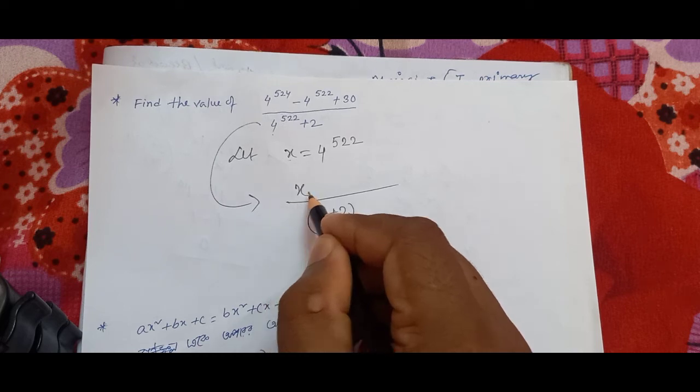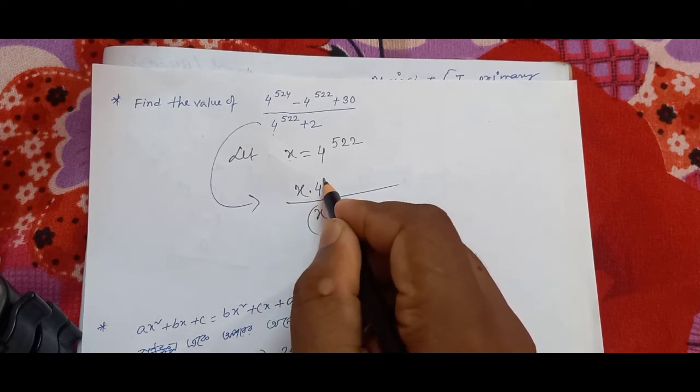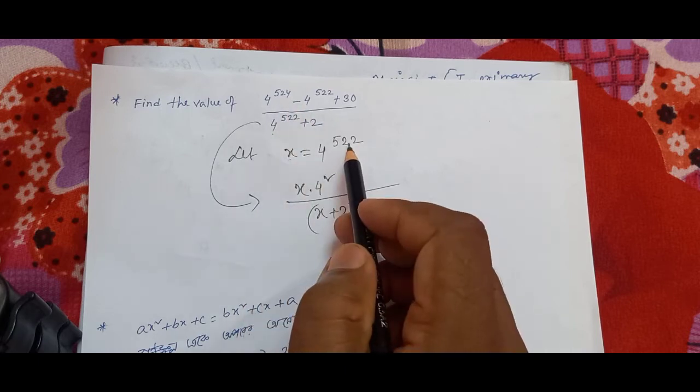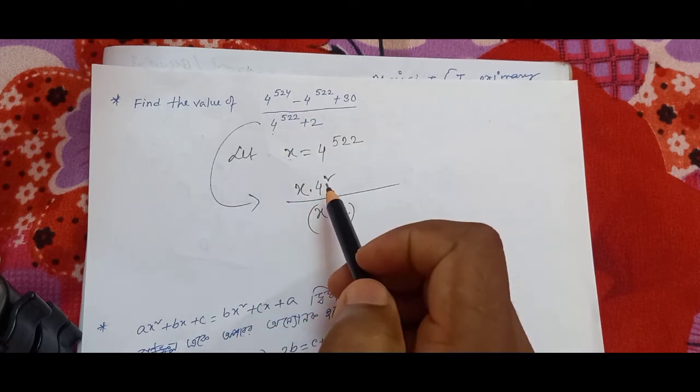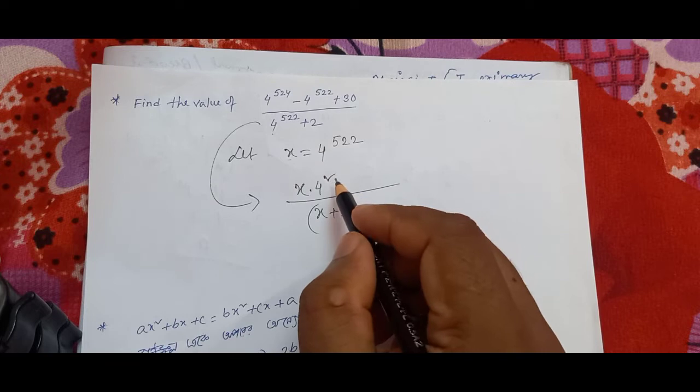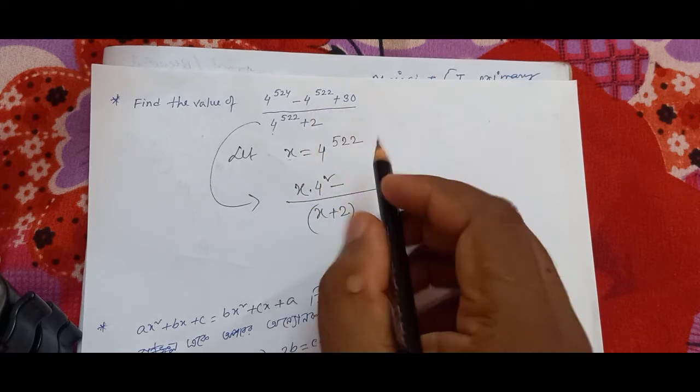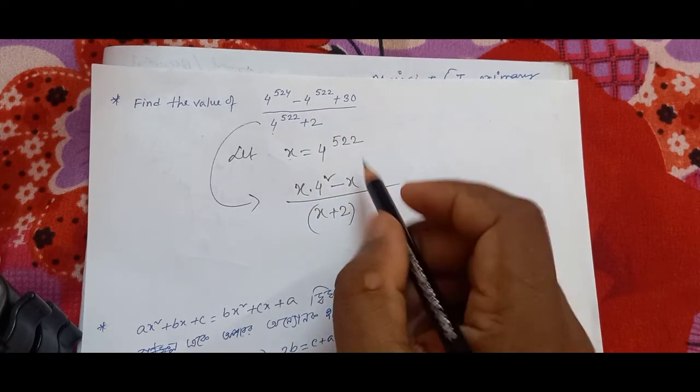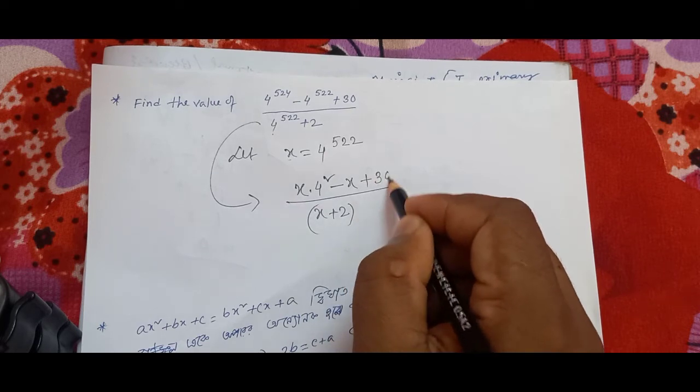This is our x into 4 square. 22 plus 2 equals 24. So we get 16x minus 4 to the power 5 to 2, this is x, plus 30.